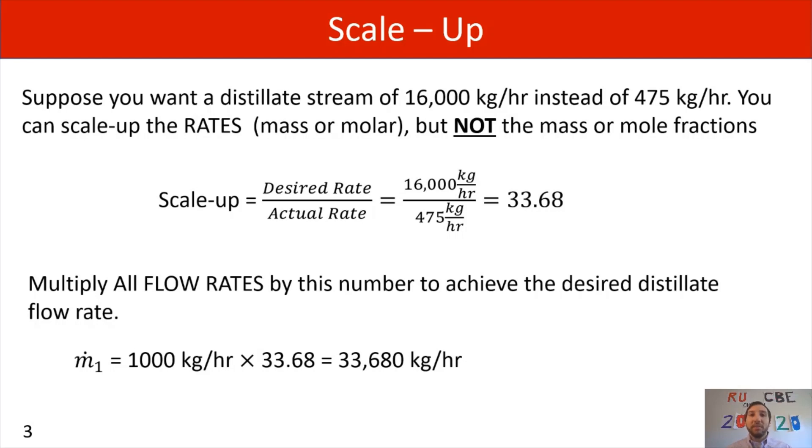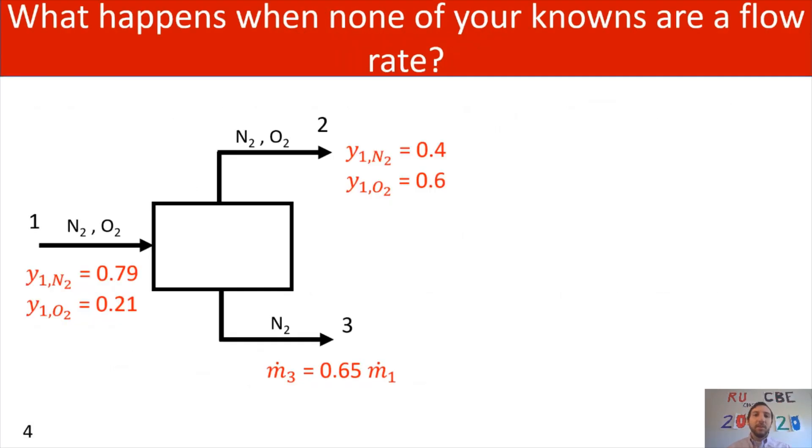And now we can apply that same concept to stream 3, our bottom stream. And what we see is that in that case, we'll have 17,682 kilograms per hour. Now, another question that we're going to enter as we continue to do these material balances is what happens when we have zero degrees of freedom, but we're not given a flow rate?